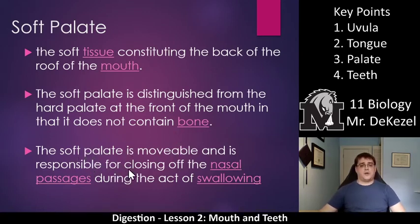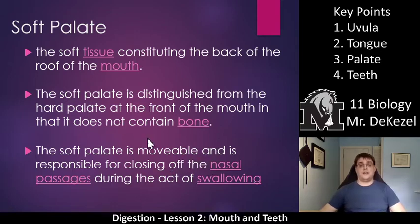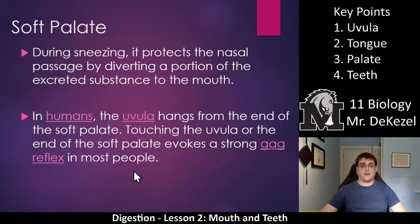The soft palate is movable and is responsible for closing off the nasal passages during the act of swallowing. When you swallow, the back of the roof of your mouth presses up and towards the back, and it stops the air from your nose from getting caught up in the swallow. During sneezing, it protects the nasal passage by diverting a portion of the excreted substance to the mouth — as you know, you can sometimes get a loogie in your mouth. And in humans, the uvula hangs from the end of the soft palate. Touching the uvula or the end of the soft palate can evoke a strong gag reflex in most people. So when you have a very long uvula, you're more likely to have a gag reflex, which is very uncomfortable.